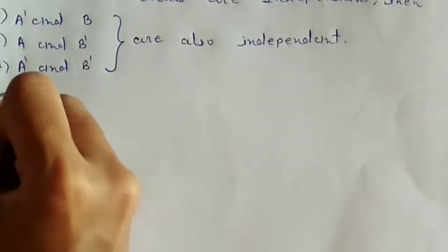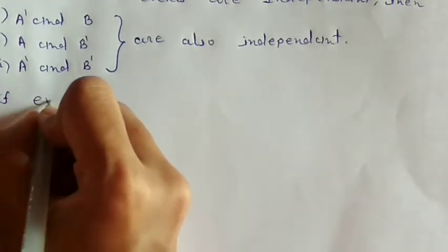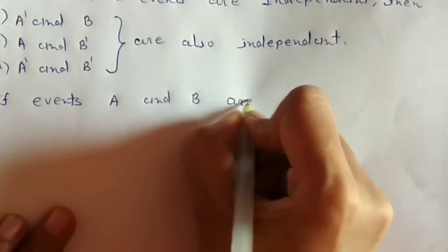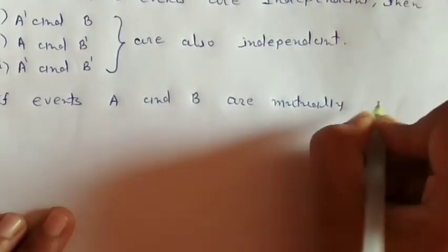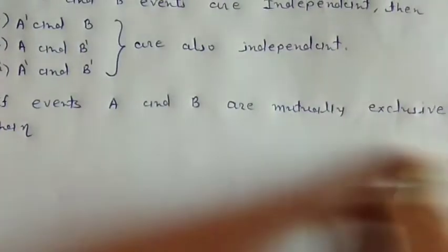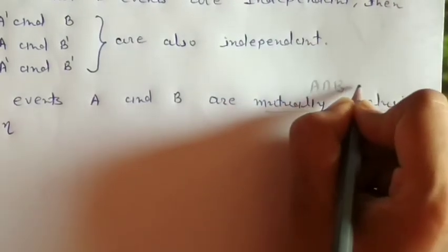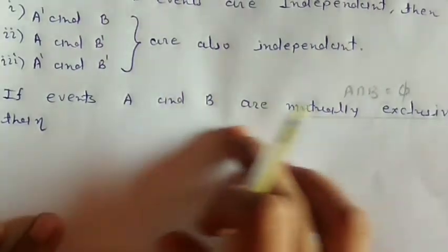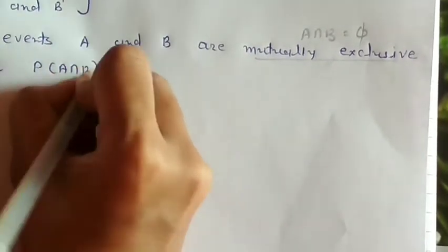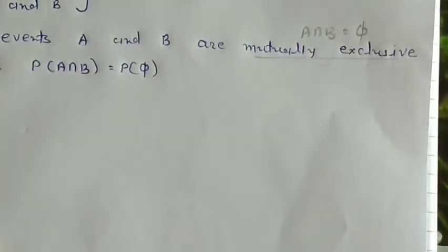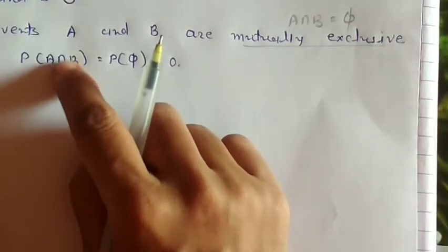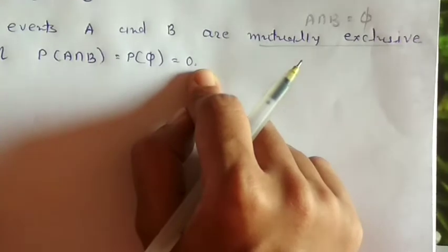Number 6: If events A and B are mutually exclusive, then as we saw earlier, A∩B = null. So the probability of A intersection B equals probability of null, which equals 0. If both events are mutually exclusive, then their intersection probability becomes 0.